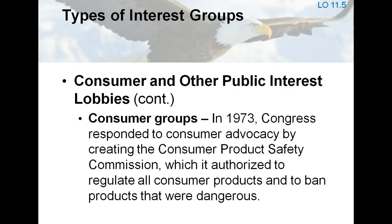The consumer movement was spurred by Ralph Nader, who was propelled to national prominence by his book Unsafe at Any Speed, which attacked the safety of General Motors' Corvair. Nader successfully sued General Motors for invasion of privacy after GM hired a private detective to dig into his background and follow him around. He used the proceeds from the damage settlement to launch the first major consumer group in Washington, D.C. Consumer groups have won many legislative victories in recent years, including the creation in 1973 of the Consumer Product Safety Commission.